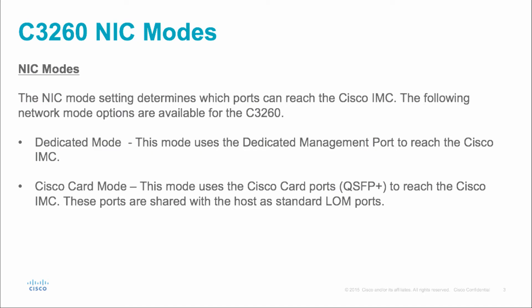The second mode is Cisco card mode. This mode uses the two Cisco card ports or QSFP ports shown previously to reach the Cisco IMC. These ports are shared with the host as standard long ports. Cisco card mode is the default NIC mode, and because there are two ports, it supports both active-active and active-standby. In active-active mode, all Ethernet ports operate simultaneously, providing multiple paths to the Cisco IMC. In active-standby, one port will fail over to the other.